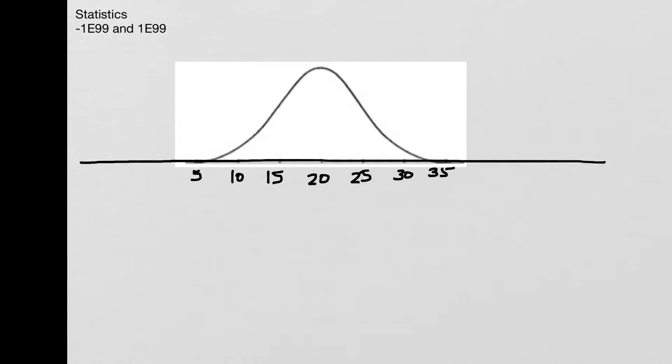For example, I might want to find the area between 12 and 21, and here's that area. And I would use the normalcdf function.